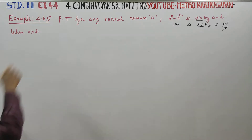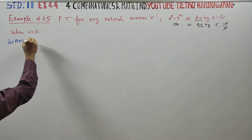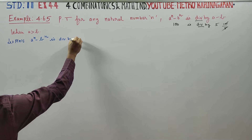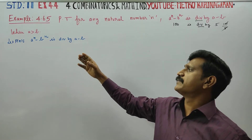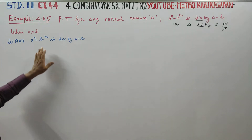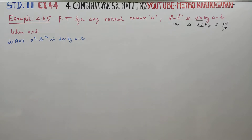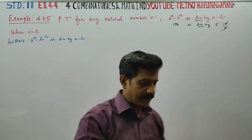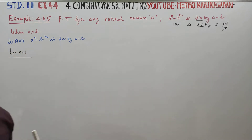Using mathematical induction, we want to show this statement is divisible by a minus b. Let P(n) be the statement: a power n minus b power n is divisible by a minus b. This is our mathematical induction statement. First step: let n equal 1. LHS and RHS are ready. Make the statement.